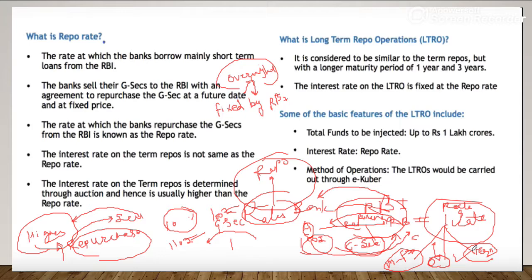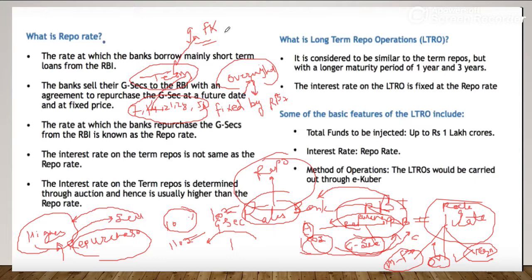If we talk about term repos, these are repos taken for a fixed term — for example, 7 days, 14 days, 21 days, 28 days, and 56 days. For term repos, the interest rate is NOT fixed by RBI; rather, it is decided through an auction/bidding procedure. Because of this bidding process, term repo interest rates are generally higher than overnight rates.